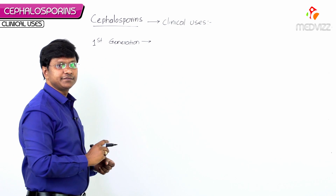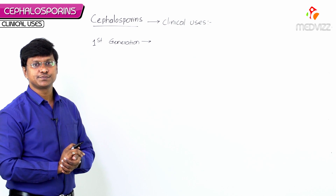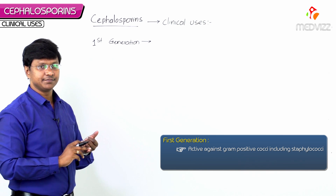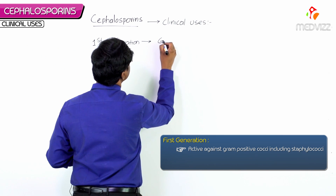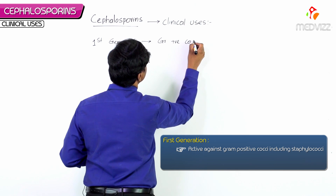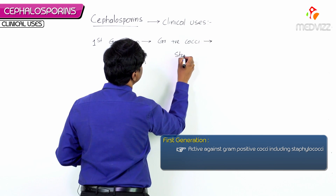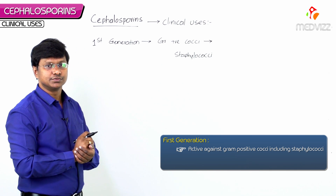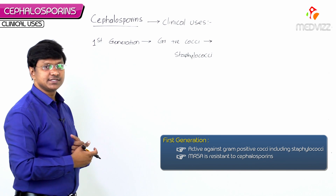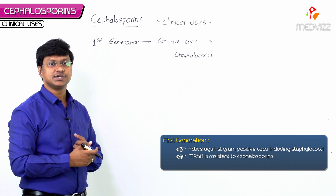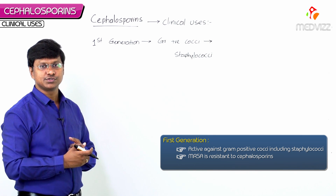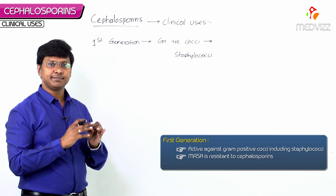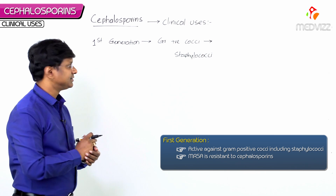The first generation cephalosporins are active against gram-positive cocci, including staphylococci. However, MRSA — methicillin-resistant Staphylococcus aureus — is resistant to cephalosporins as well. For MRSA, the drug of choice is vancomycin. Other penicillins and beta-lactams are also ineffective against MRSA.